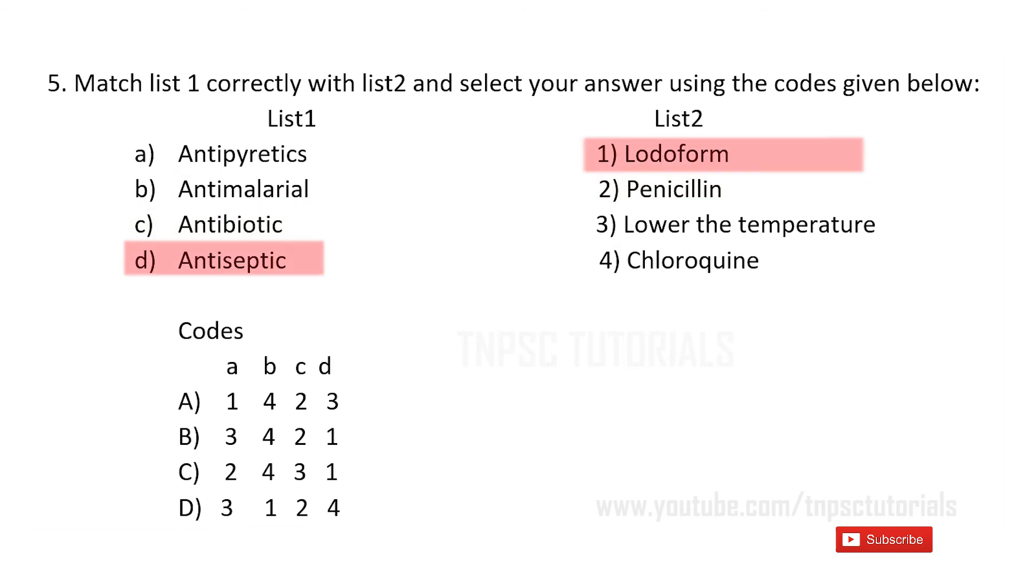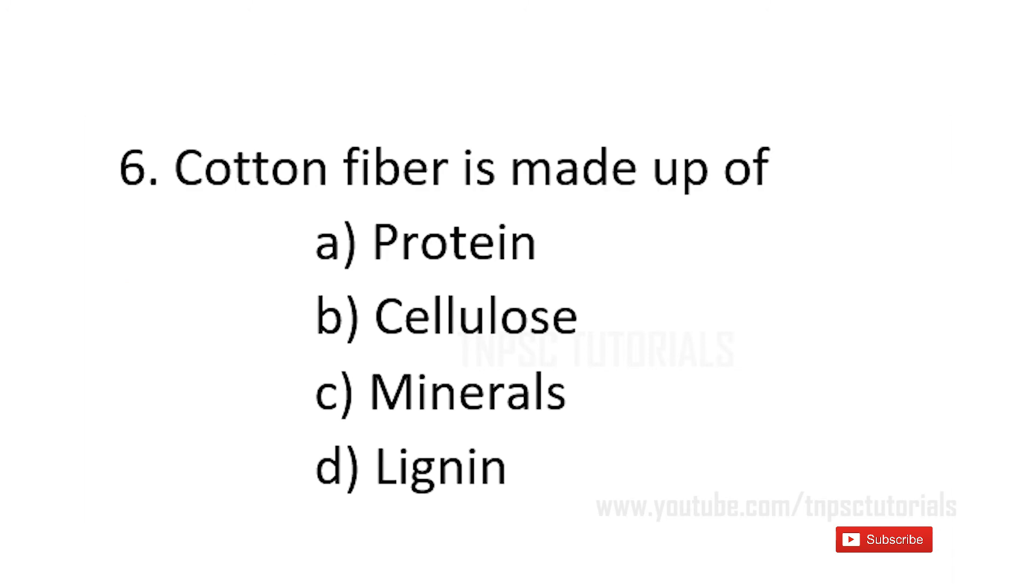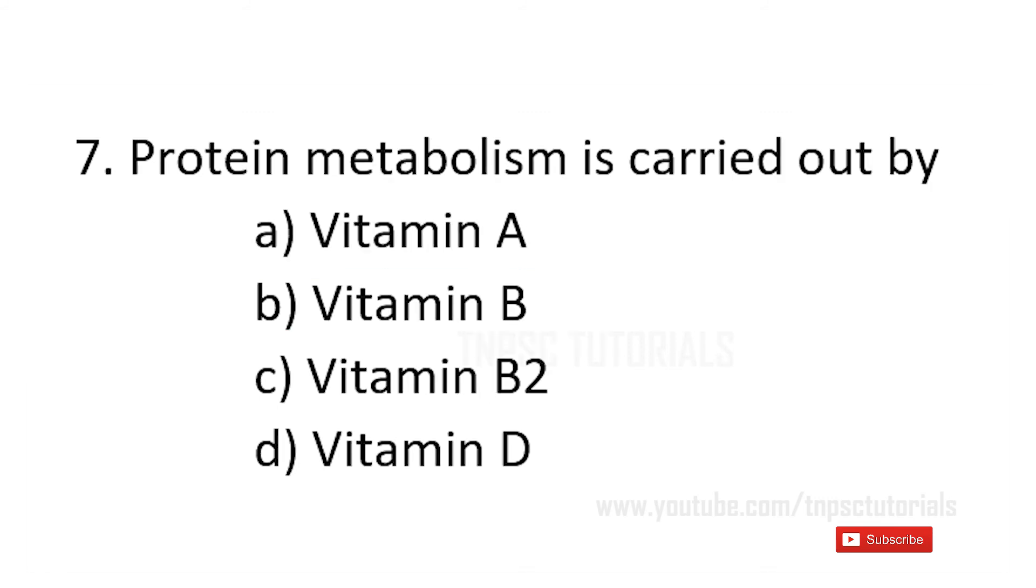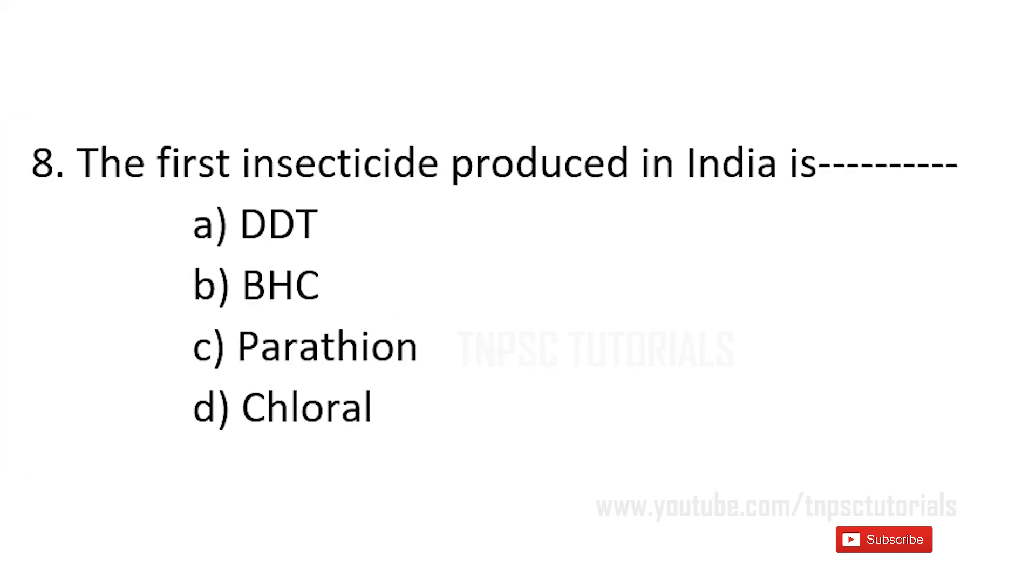Sixth one: cotton fiber is made up of a) protein, b) cellulose, c) minerals, d) lignin. And the answer is b) cellulose. Seventh one: protein metabolism is carried out by a) vitamin A, b) vitamin B, c) vitamin B2, d) vitamin D. And the answer is c) vitamin B2.